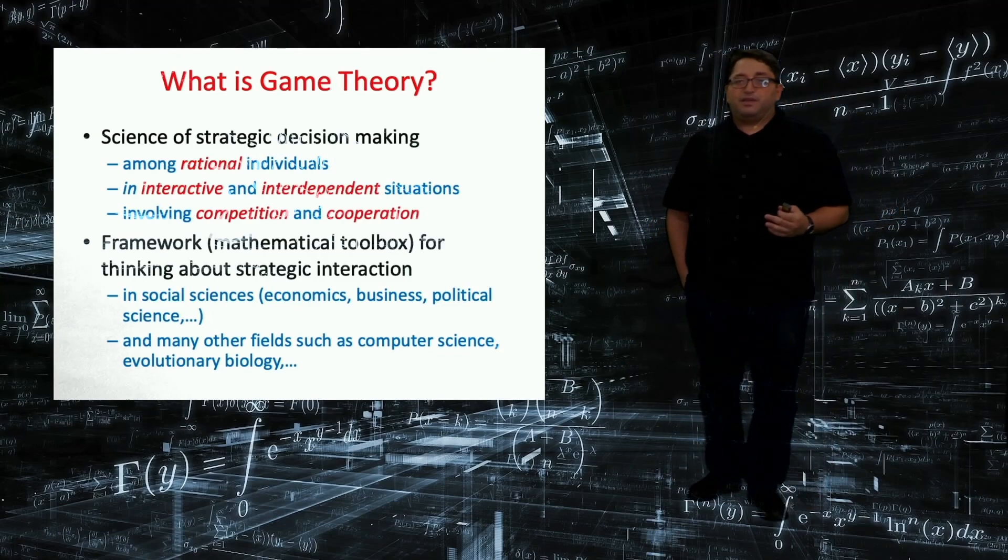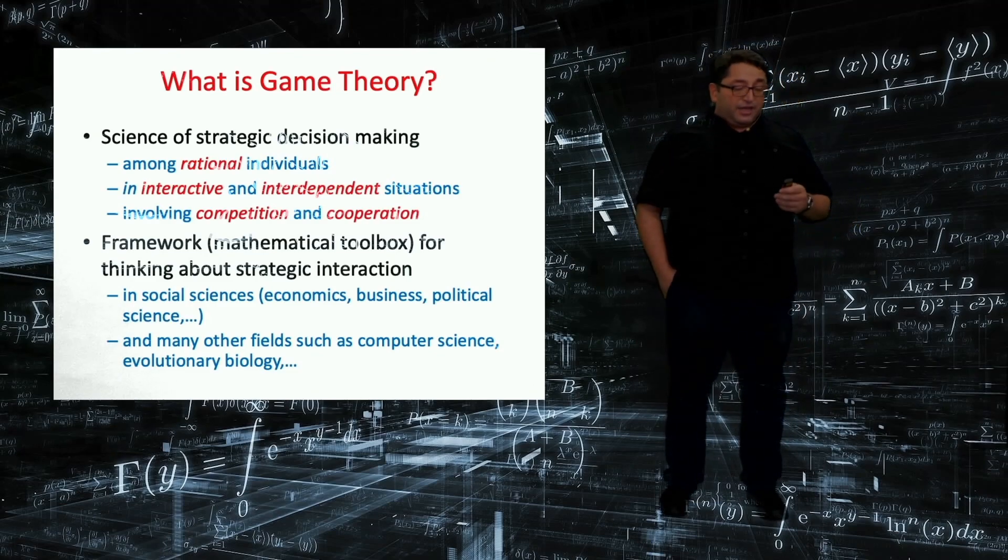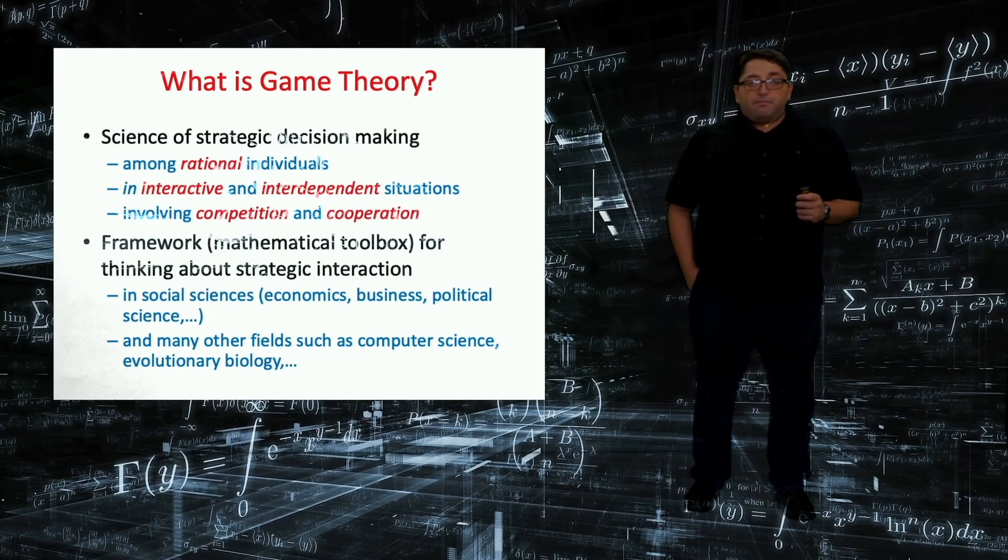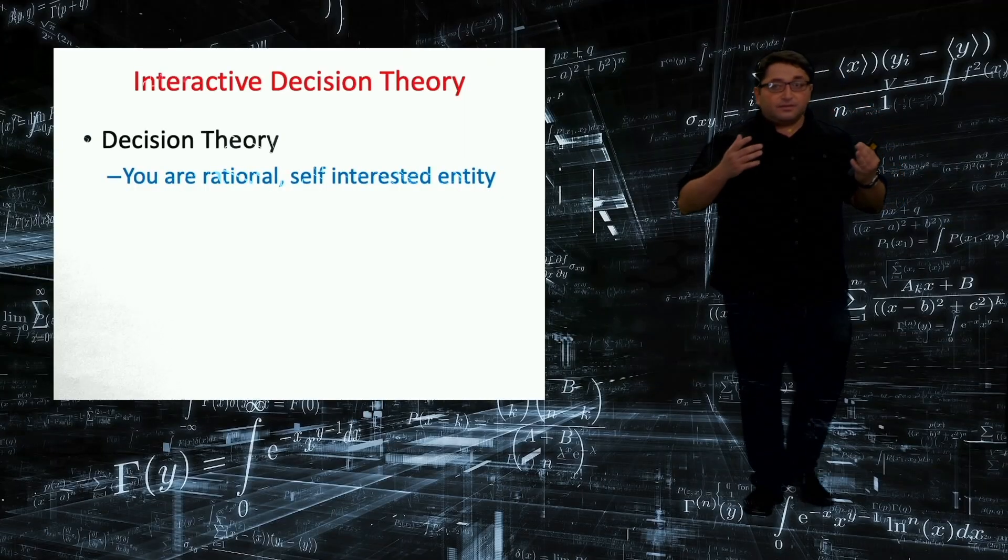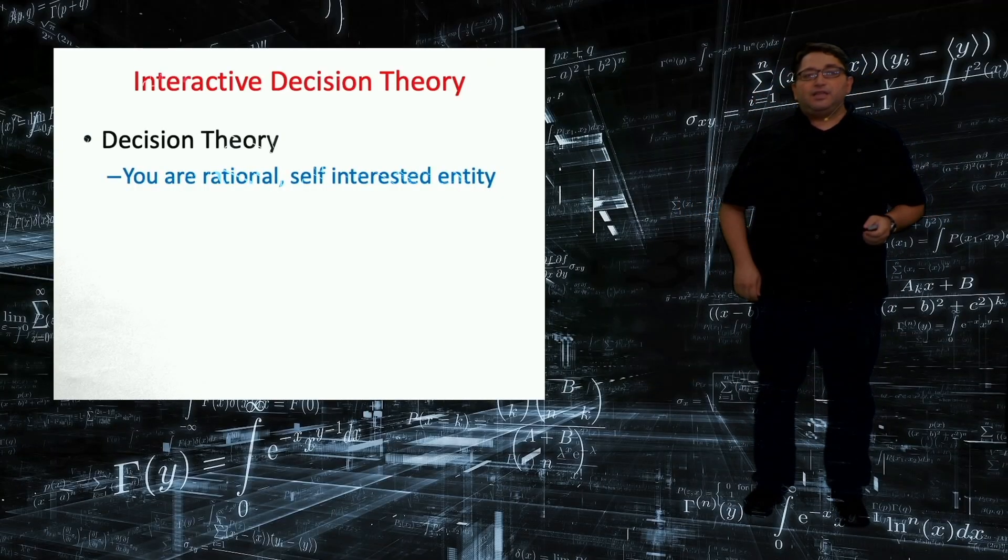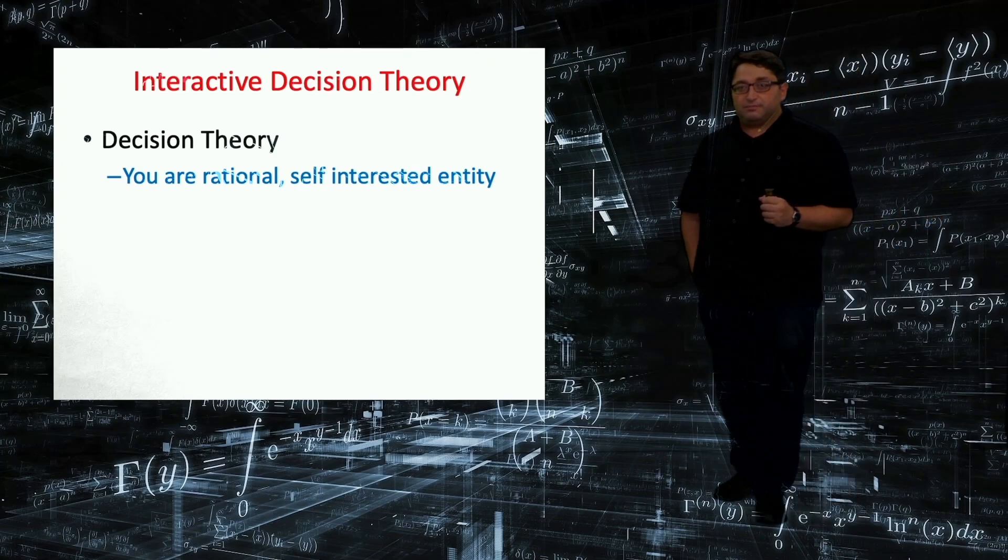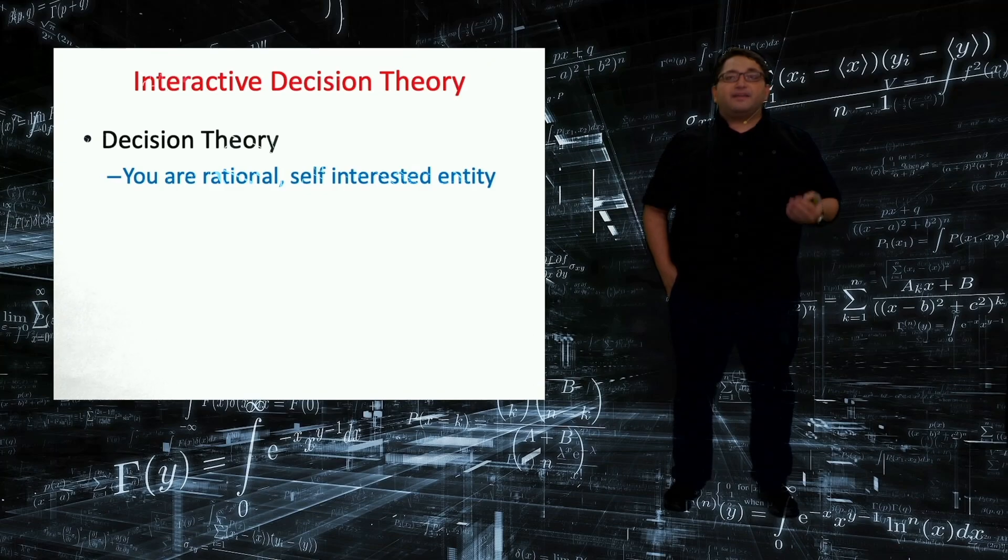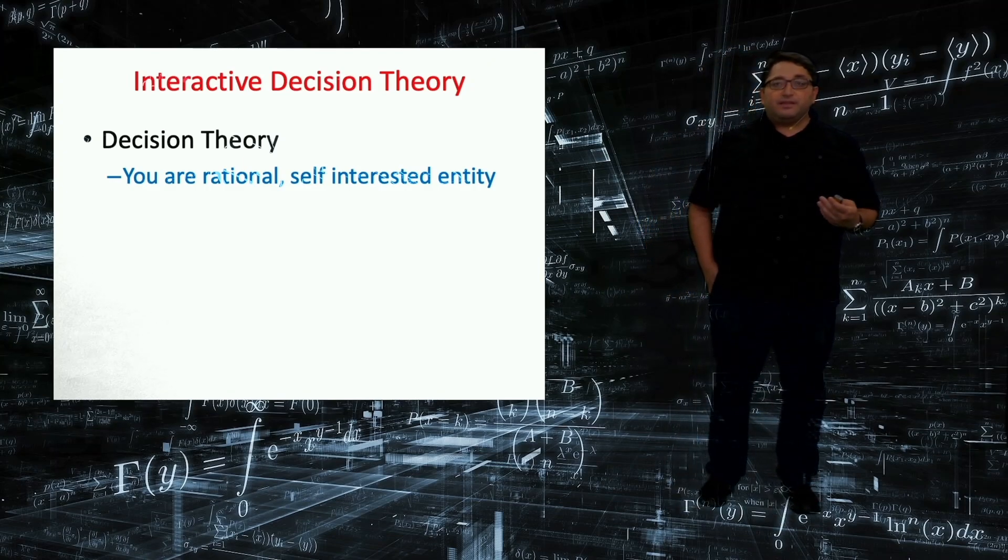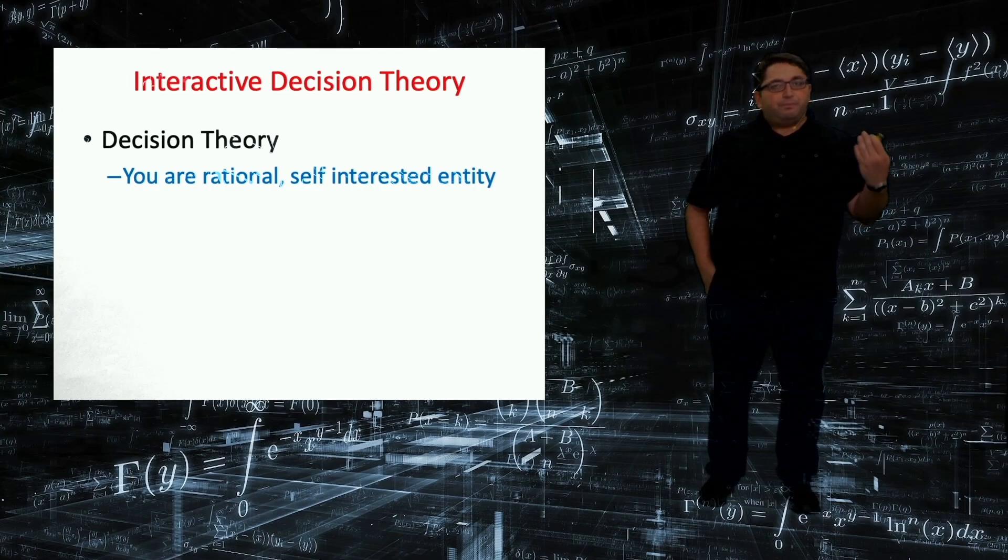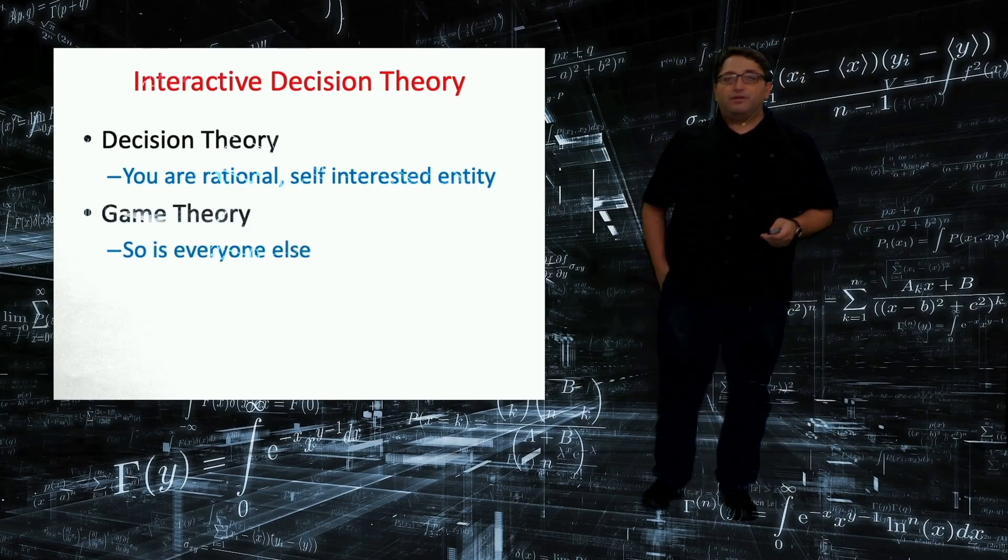You can even find numerous applications in other fields such as computer science and evolutionary biology. You can think of Game Theory as a generalization of decision theory. In decision theory, we are trying to understand how one individual makes an optimal decision—how does she maximize her utility subject to budget and other constraints? And in Game Theory, we are assuming that everybody else that I am competing or cooperating with, they are also rational.